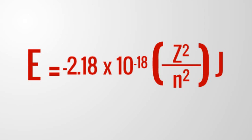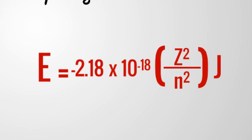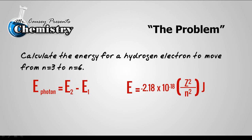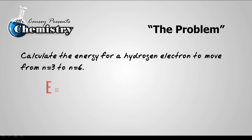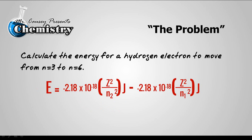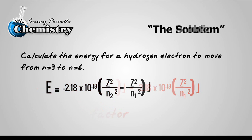But it does give us some idea of how Bohr came up with the idea of energy levels and eventually led to the quantum mechanical idea. I'm going to remember that Z is the atomic number and that N is the energy level. And then we're going to substitute that into the equation and factor to get this new equation.